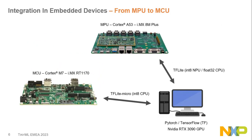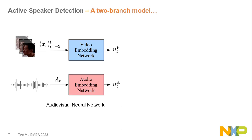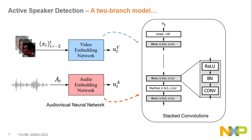Our setup involves developing the model in PyTorch or TensorFlow using a single GPU, then porting it using TF-Lite Micro for MCU and TF-Lite for the NPU, with quantization applied for both. The model is a two-branch architecture, one branch per modality, which is common for multi-modal architectures. Each branch uses an embedding network — a network that transforms input data into a vector using stacked convolutions.